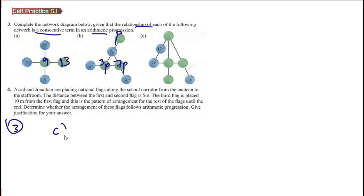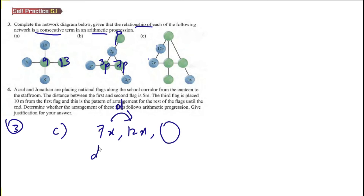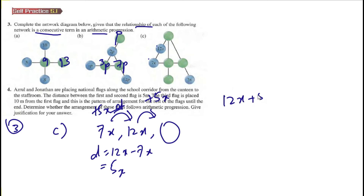For part c, we identify the arithmetic sequence. We have 7x, 12x, and a box. The common difference d equals 12x minus 7x equals 5x. So 12x plus 5x equals 17x, and the box is 17x.